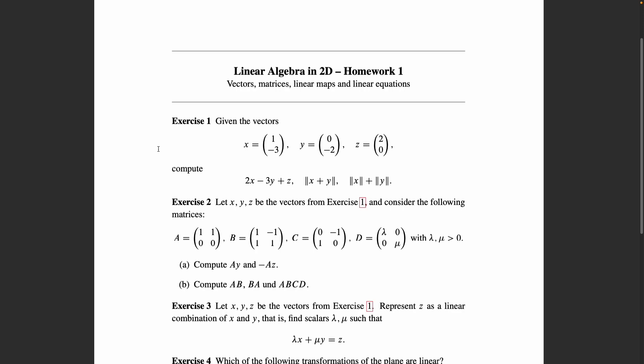In the first exercise you're just supposed to play around with vectors a little bit. I'm giving you three vectors in their coordinate form here and just compute this linear combination of the three vectors 2x minus 3y plus z, and compute the norms of the vector x plus y and compute the sum of the norms of the vectors x and y.